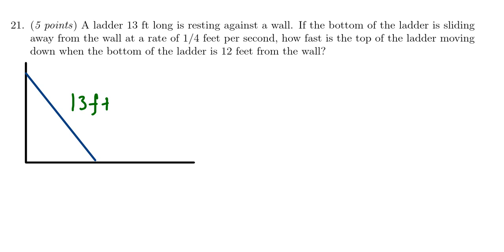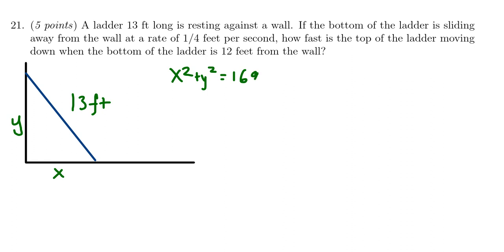The problem doesn't mention anything about a collapsing ladder, so it's fair to assume the length of the ladder will be constant at 13 throughout. We're going to let X be the distance between the wall and the bottom of the ladder — this should be increasing with time. As the ladder slips, it also falls. Let Y be the height above the ground, that is, the distance from the ground to the top of the ladder at a given moment of time. These quantities are related by the Pythagorean relationship: X squared plus Y squared equals 13 squared, which is 169.